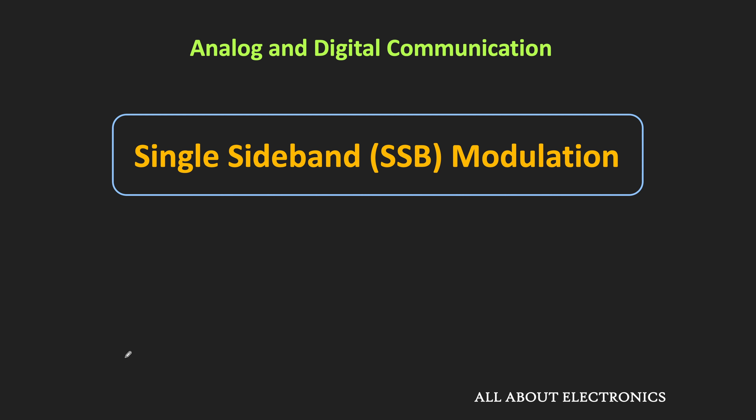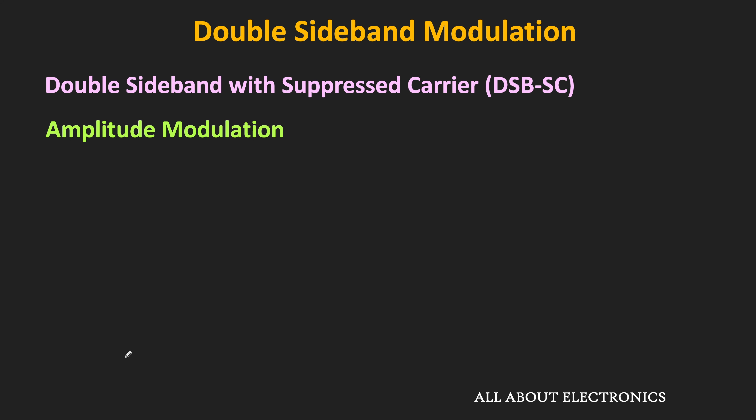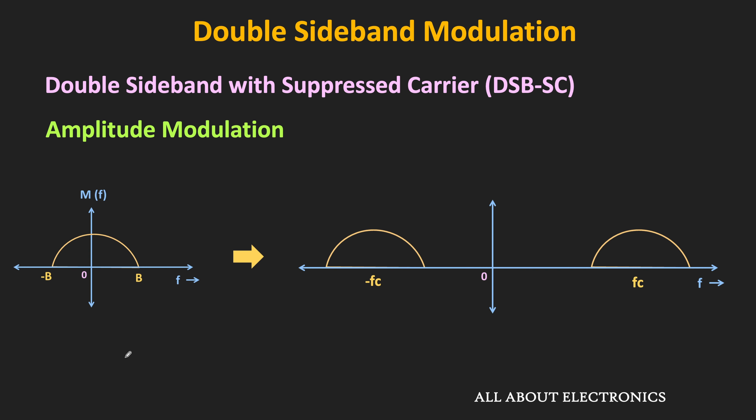This single sideband modulation is also one type of amplitude modulation. But unlike other amplitude modulation, this single sideband modulation is a bandwidth efficient scheme. If we look at double sideband suppressed carrier and conventional amplitude modulation, then after modulation, the spectrum contains two sidebands — the upper sideband and the lower sideband.